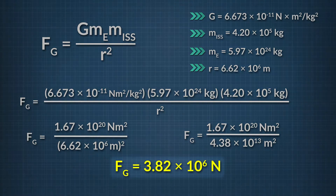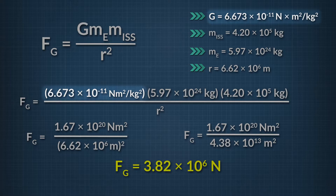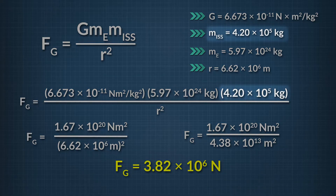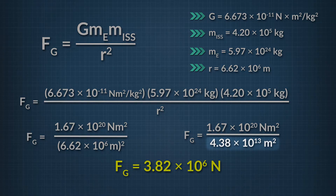Did you get 3.82 times 10 to the 6 newtons? If so, great job. If not, let's look at the solution. Multiplying the gravitational constant times the mass of the Earth times the mass of the ISS gives 1.67 times 10 to the 20th newton-meters squared. We then divide by the radius squared — 6.62 times 10 to the sixth, squared — which is 4.38 times 10 to the 13th, and we find the total gravitational force is 3.82 times 10 to the 6 newtons.